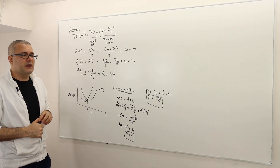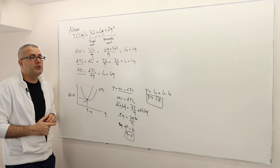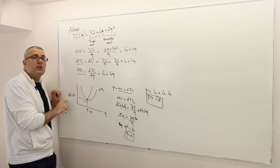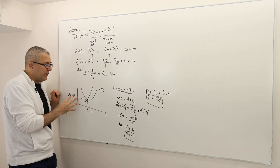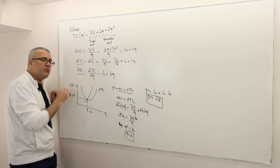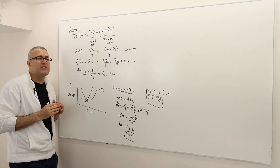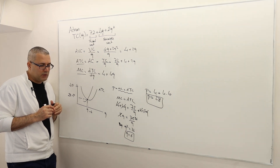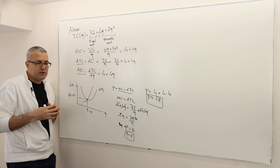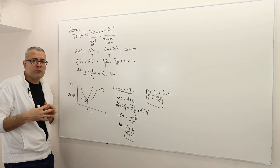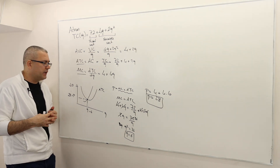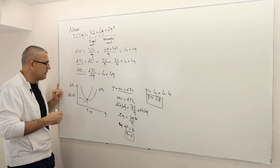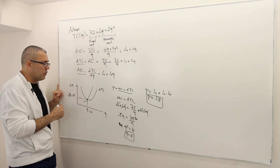Part C: If the price of dolls increases to $40, how much profit would Adnan make? The long-run price should be $28 with zero profit. But suppose — for example, due to a trade agreement causing a surge of tourists — demand increases and in the short run the price jumps to $40. What is the profit at this new price?